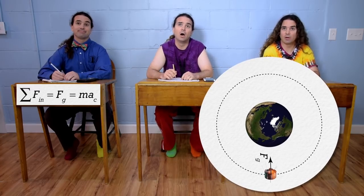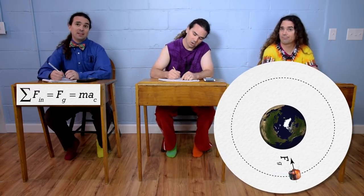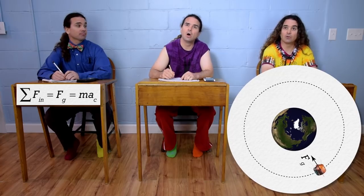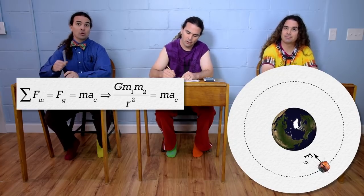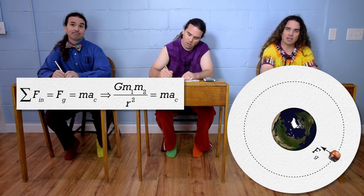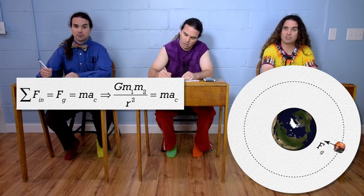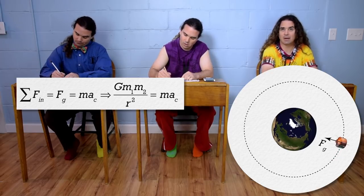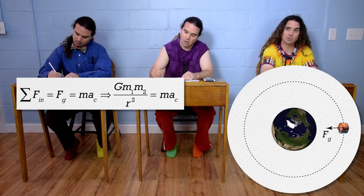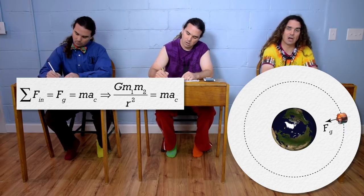We use the big G equation for the force of gravity — that is Newton's universal law of gravitation. Big G is the universal gravitational constant. Big G times mass 1 times mass 2, all divided by r squared, where r is the distance between the centers of mass of the two objects.